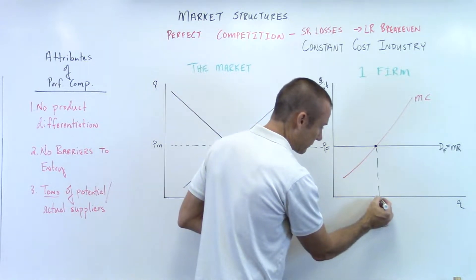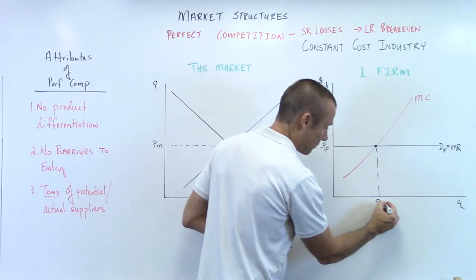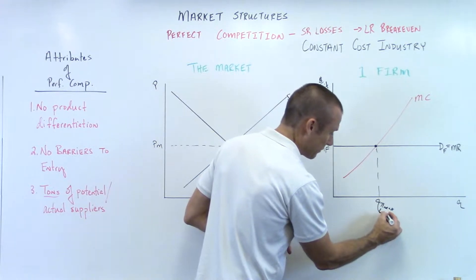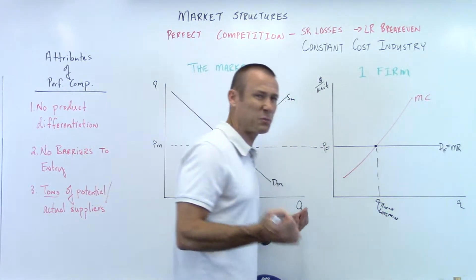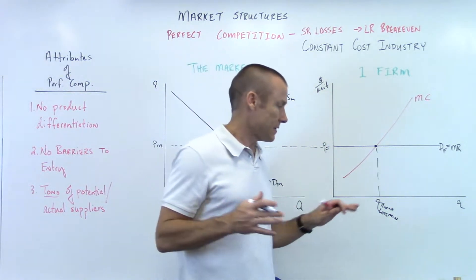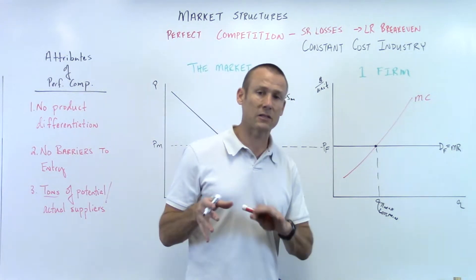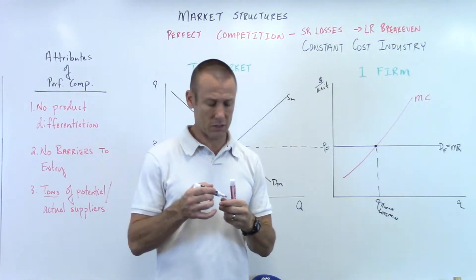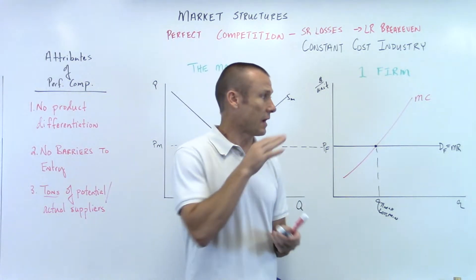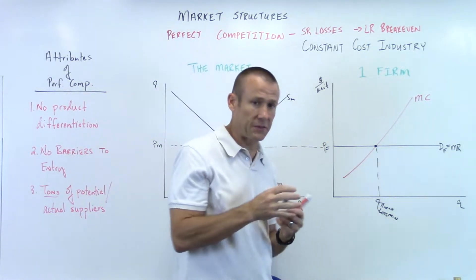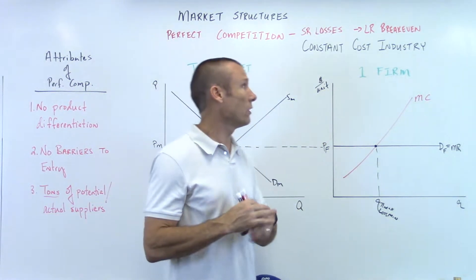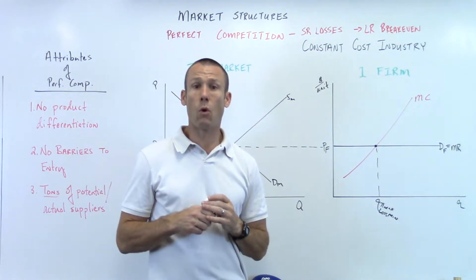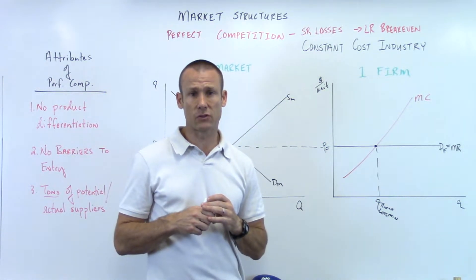So we've got the output level — Q, profit max, or loss min. I better put loss min also. That Q is actually profit max or loss min, and since I'm doing losses, let's put loss min. We've got the MC, we've got the MR. To show losses, we need the average total cost curve. Why? Because we need to be able to see total cost. We can already see total revenue: price times Q, that box right there.